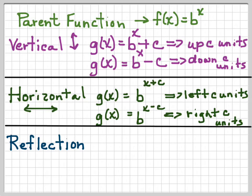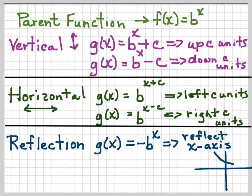A reflection. A reflection, if we have negative b raised to the x power, that's going to be a reflection over the x axis. It's going to be a horizontal flip. Which means if we start off like this, and we want to put a negative sign in front of the entire thing, minus b raised to the x power, it's going to flip it down.